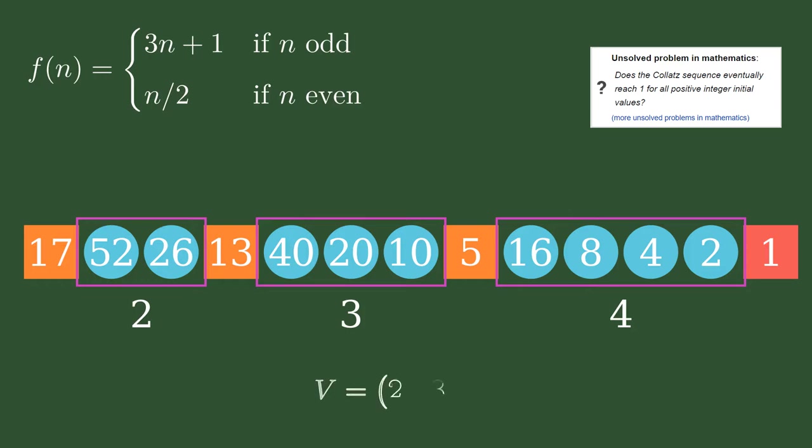From a list of variables, we can form a vector. Now we have a method to model how each starting seed behaves as a vector. Since there's always a guaranteed even number after an odd number, we don't need to count that one, so we're going to subtract 1 from each of the elements of the vector.